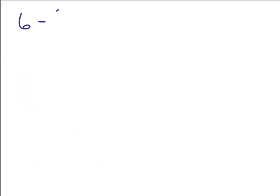Some people can do this in their head. For 6 minus 3 fourths, think: what do you add to 3 fourths to get 6? Adding 1 fourth gives you 1, then adding 5 more gets you to 6. So the answer is 5 and 1 fourth. If you get the right answer and it makes sense, that works. If not, use the method I just showed.